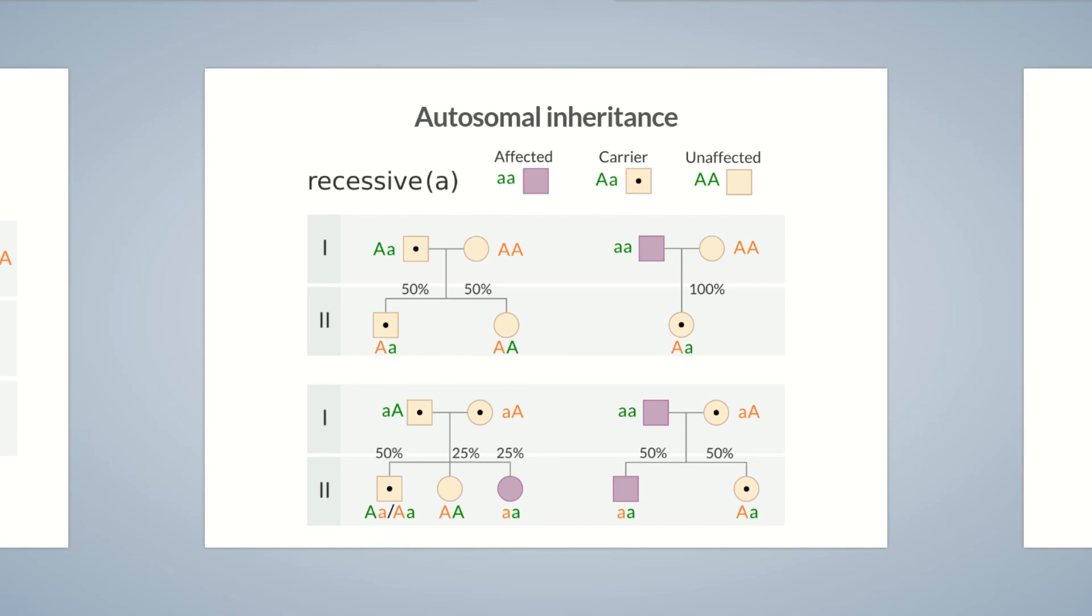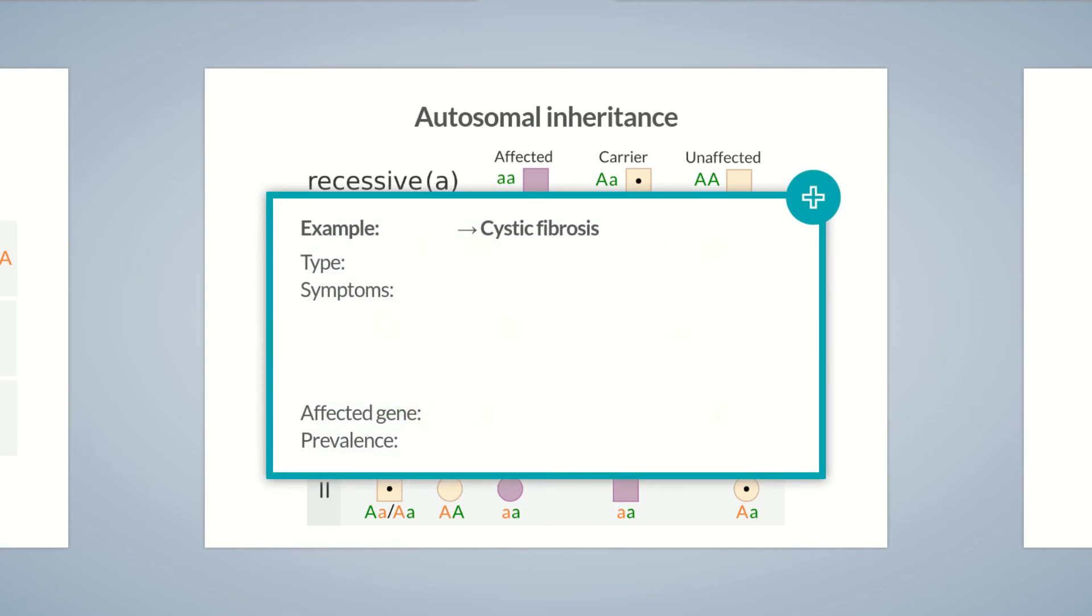An example of autosomal recessive inheritance is cystic fibrosis. It's the most common hereditary autosomal recessive condition in individuals of Northern European descent. Cystic fibrosis is caused by a mutation in the CFTR gene on chromosome 7. The CFTR gene codes for a chloride channel protein in cell membranes. A mutation of the CFTR gene leads to the production of hyperviscous secretion in the body's exocrine glands.